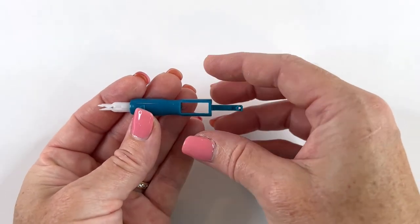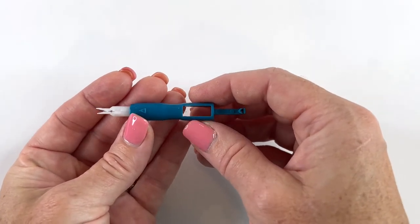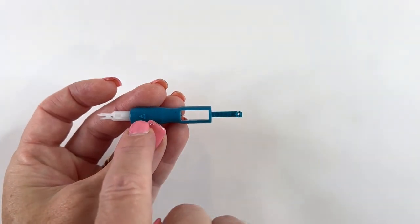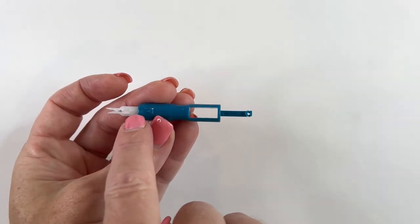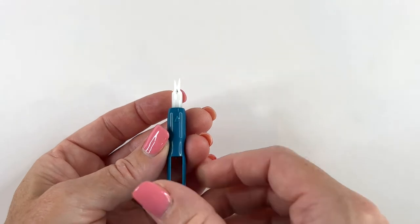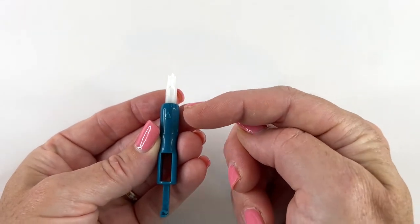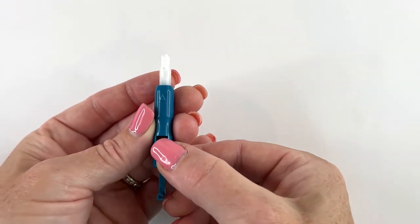We're just going to discuss this part here. Now it's not a tool where anything clicks into place. There's nothing you have to turn on or off. There's a little arrow here to indicate the top of this tool. So when I'm using it, I want that arrow to be on the top when I'm using my needle threader.